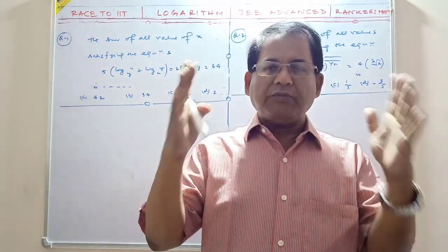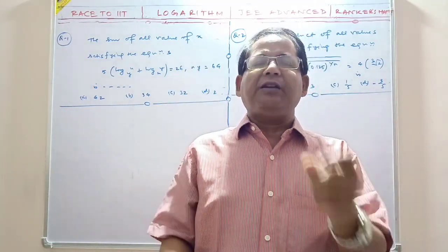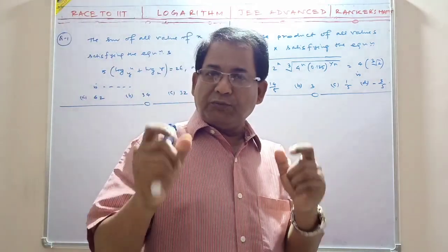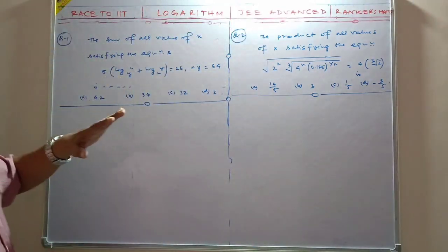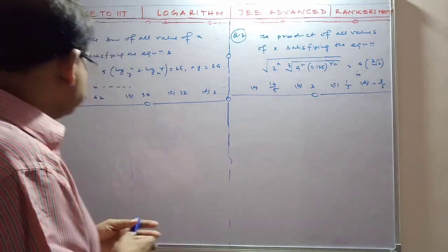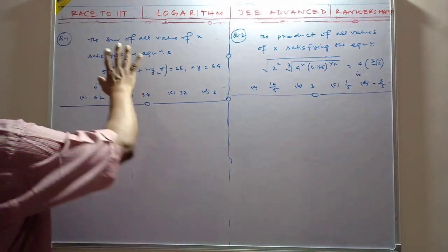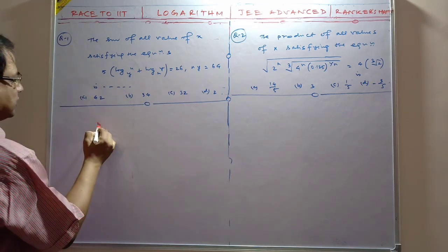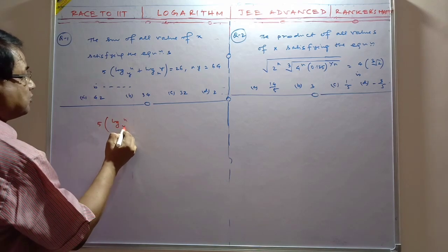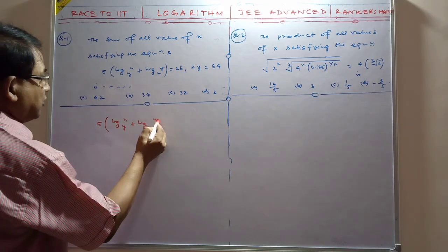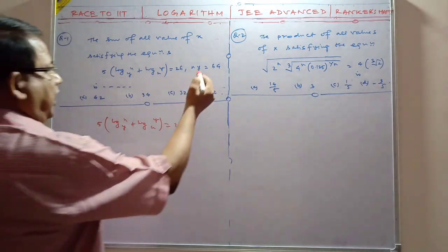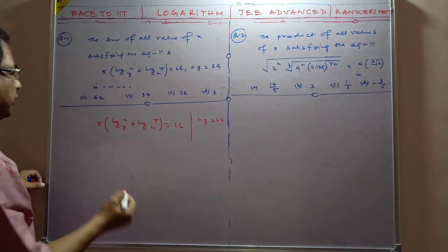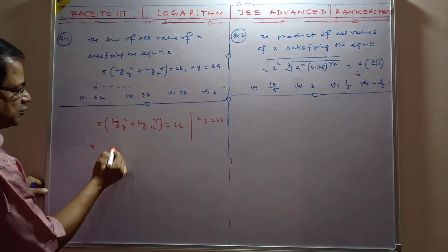My dear friends, you should understand and practice these questions well — this type of question has a very high possibility of being asked. Now let me show you two questions. The sum of all values of x satisfying these equations: 5·log(x/y) + log(y/x) = 26, and xy = 64.